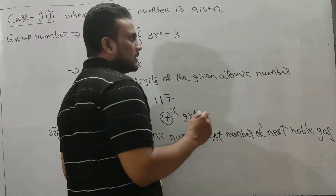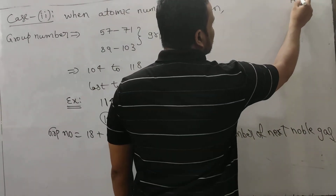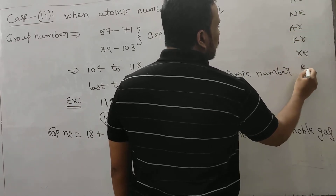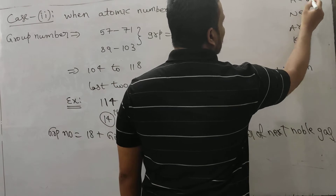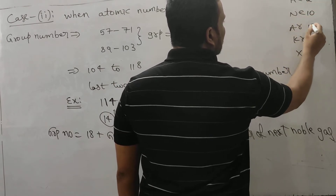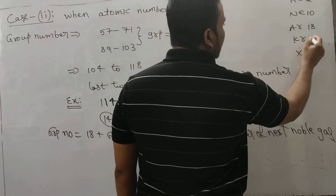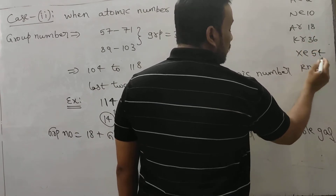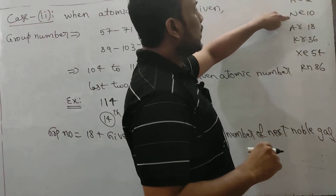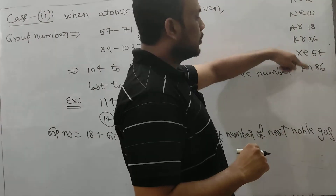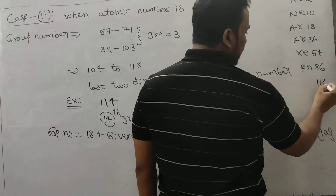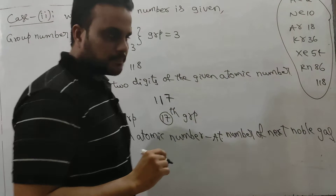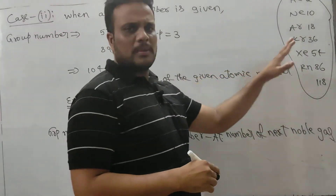The atomic numbers of noble gases can be easily memorized. Helium is 2, neon is 10, argon is 18 — there is a difference of 8 in these magic numbers. Then 18 plus 18 equals 36 (krypton), 36 plus 18 equals 54 (xenon), 54 plus 32 equals 86 (radon). So the difference goes 8, 8, then 18, 18, then 32. Next noble gas is atomic number 118, which we know is yet to be fully discovered. These are the atomic numbers of noble gases.